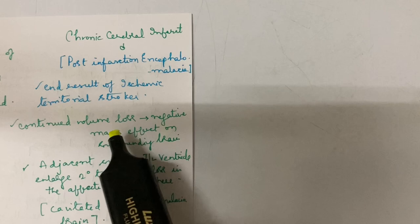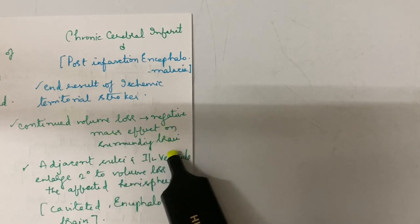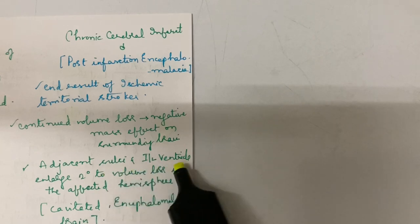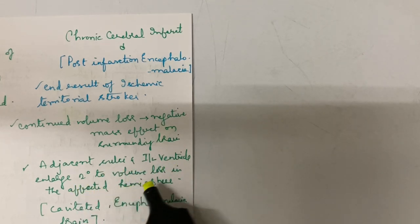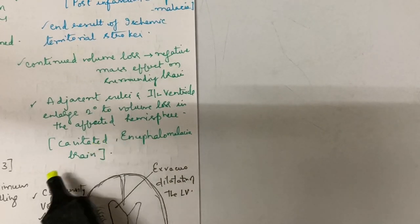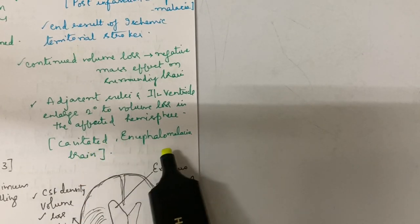Normally there will be continued volume loss with negative mass effect on surrounding brain. Due to negative mass effect, the adjacent sulci and ipsilateral ventricle enlarge secondary to volume loss in the affected hemisphere. We have cavitated brain and encephalomalacia.